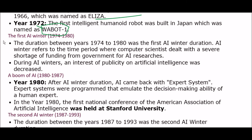The next phase of AI is the first AI winter, from 1974 to 1980. During this period, computer scientists dealt with a severe shortage of funding from government for AI research. During AI winters, interest and publicity around artificial intelligence decreased significantly.